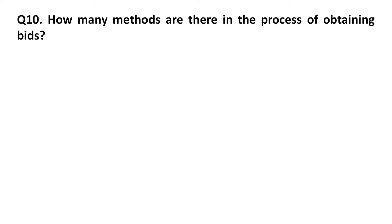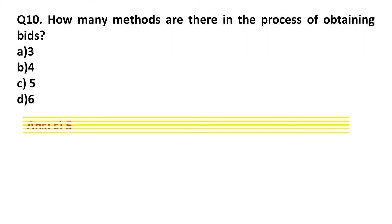Question 10: How many methods are there in the process of obtaining bids? Option A: 3. Option B: 4. Option C: 5. Option D: 6. Answer: Option C, 5.